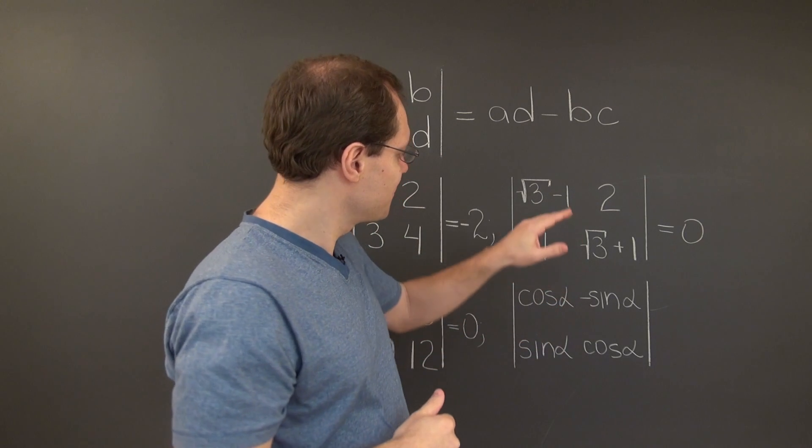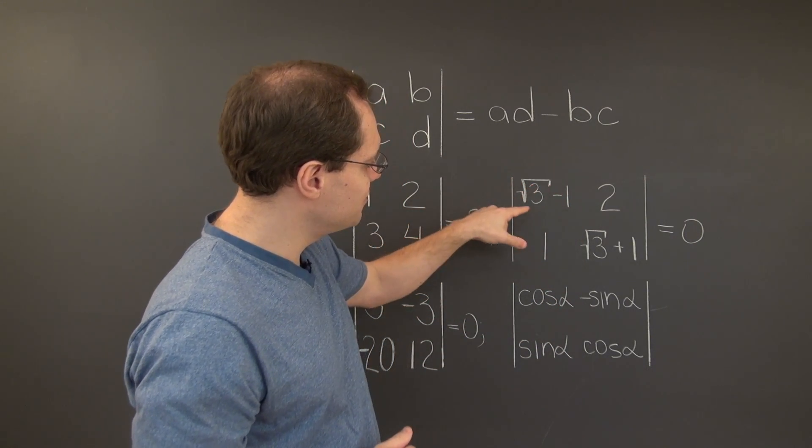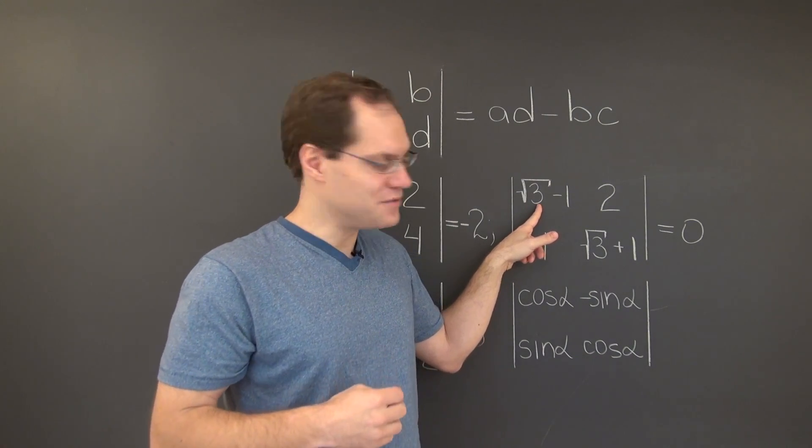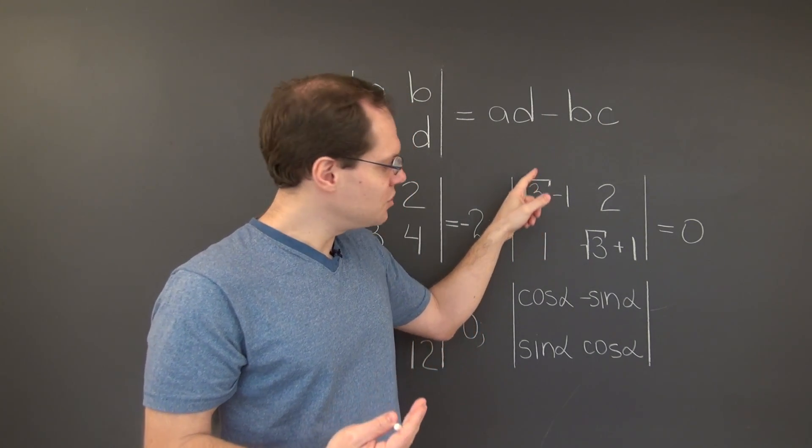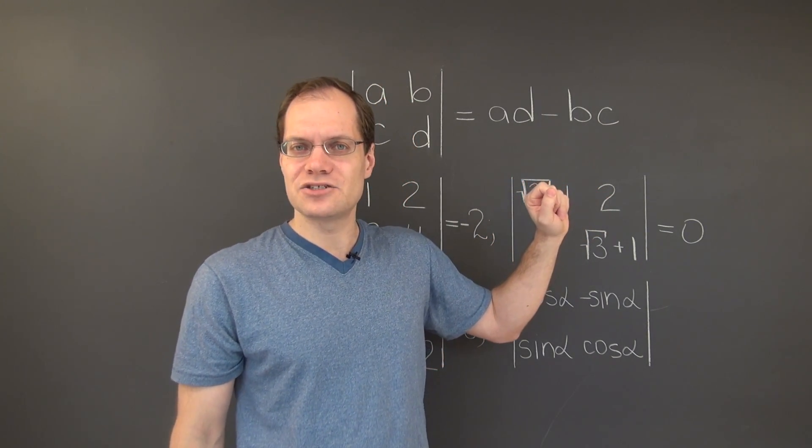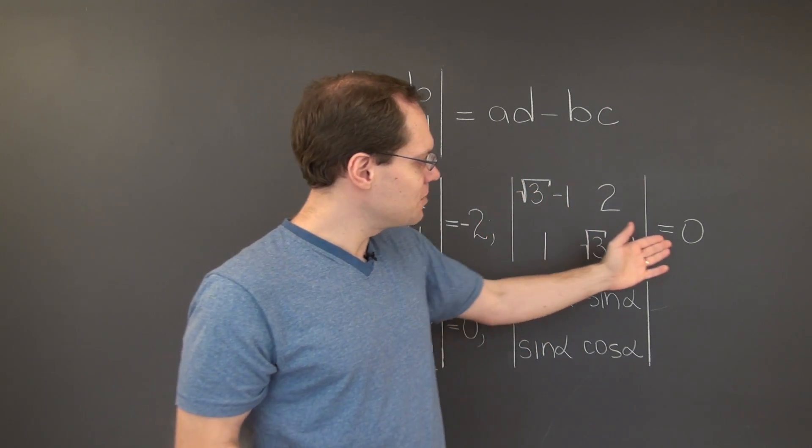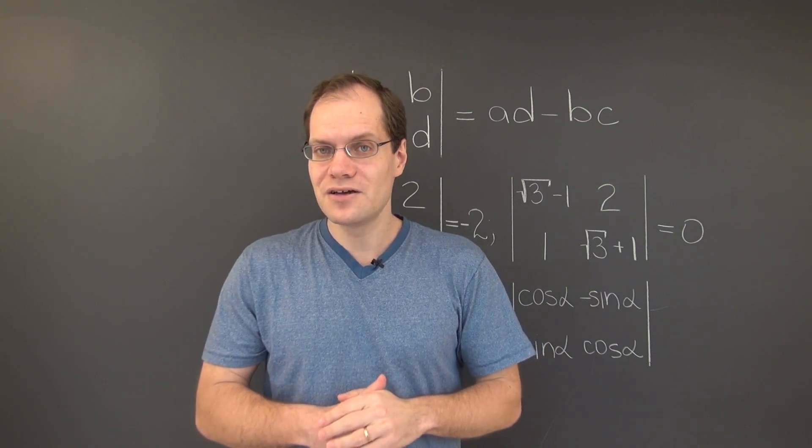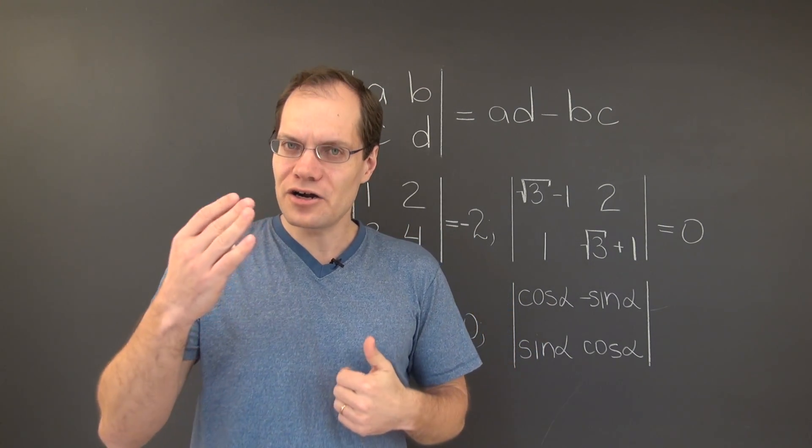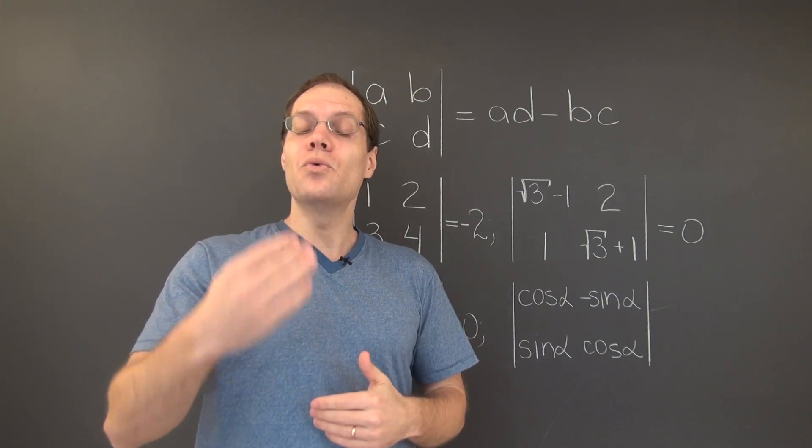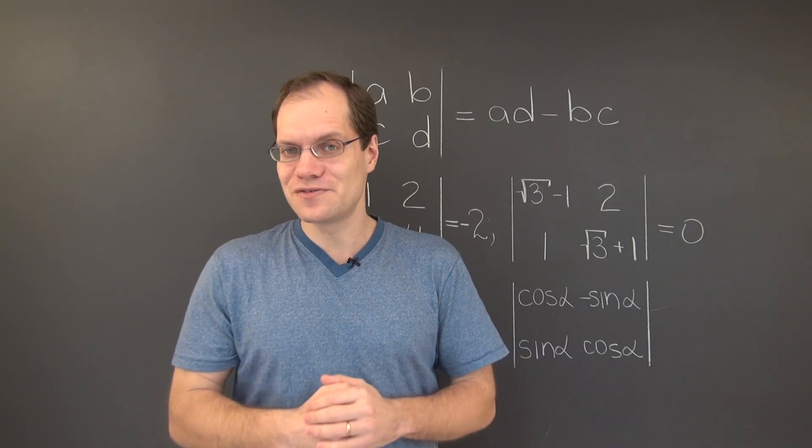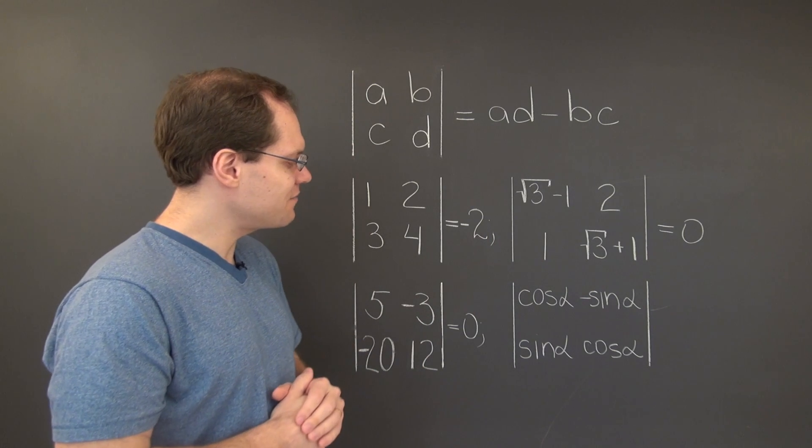Let's make sure that it does. Multiplying this entry by square root of 3 plus 1 equals 2, so we do indeed get this entry. In this case, the determinant helped us identify that the columns are linearly dependent for a matrix where our original guess would have been the opposite. The determinant is very useful.